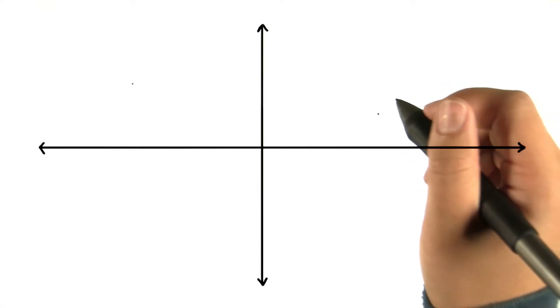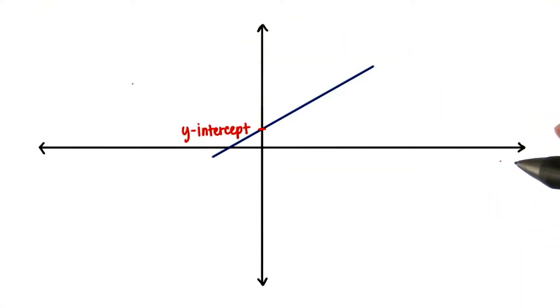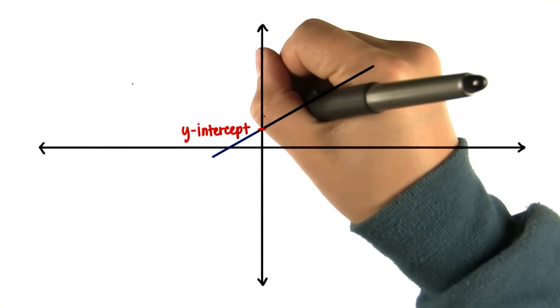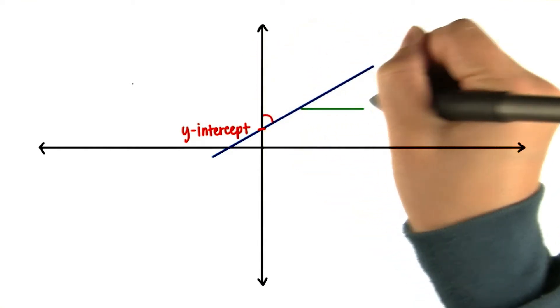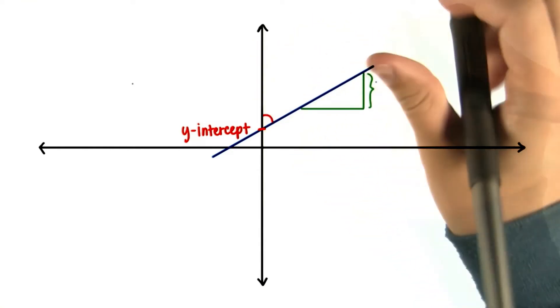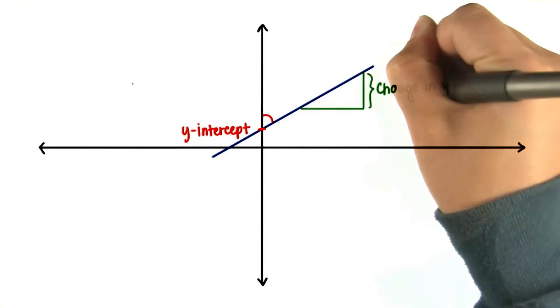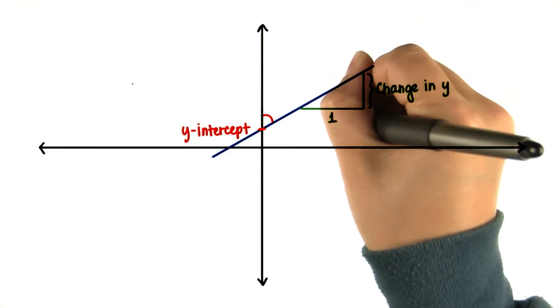To analyze this line, we need to know where it hits the y-axis and at what angle. This angle is generally referred to as the slope, which is essentially the amount that y changes when x changes by one unit.